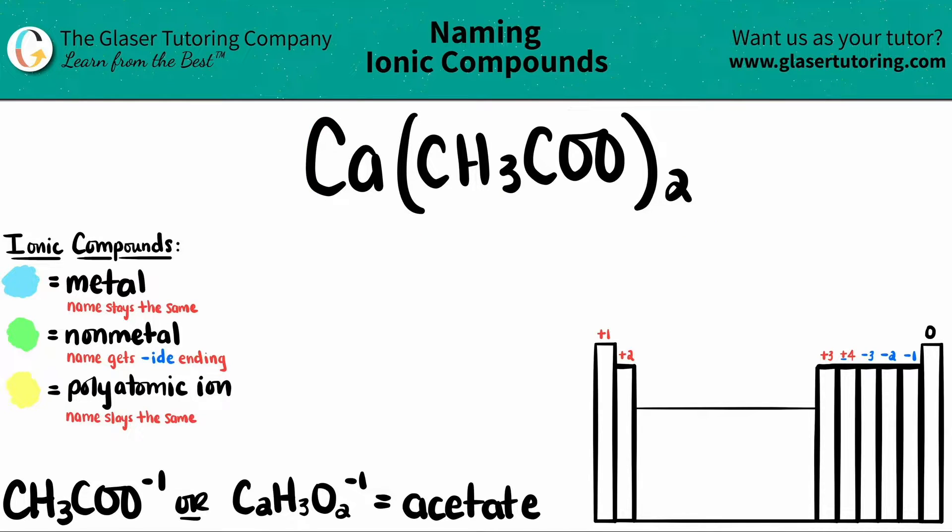The first thing to know is that if you have three or more distinct elements in your ionic compound, you have at least one polyatomic ion. So the easiest thing is to spot the polyatomic and work from there.